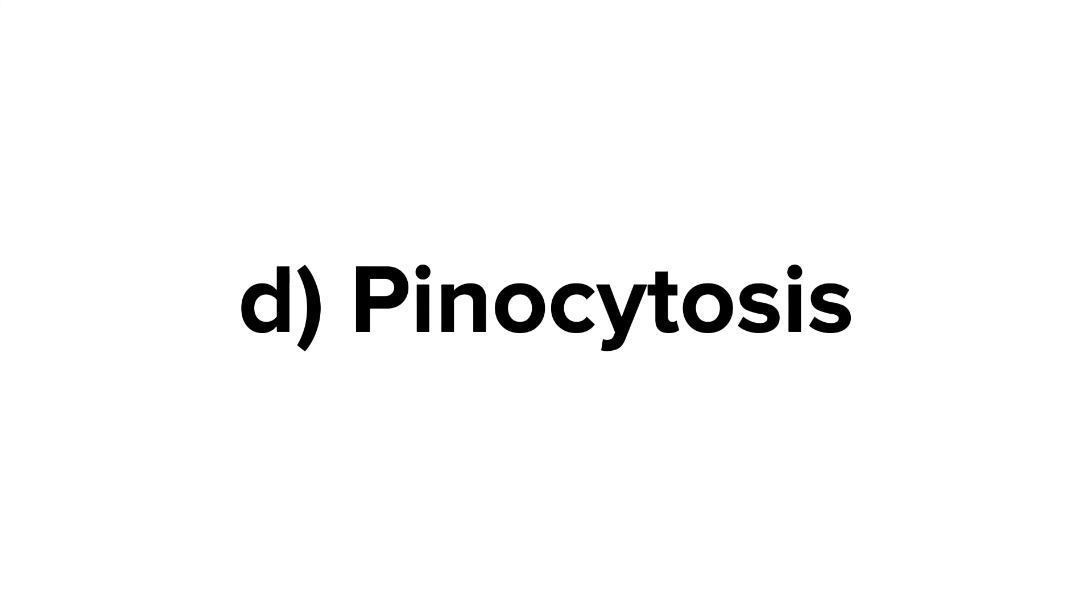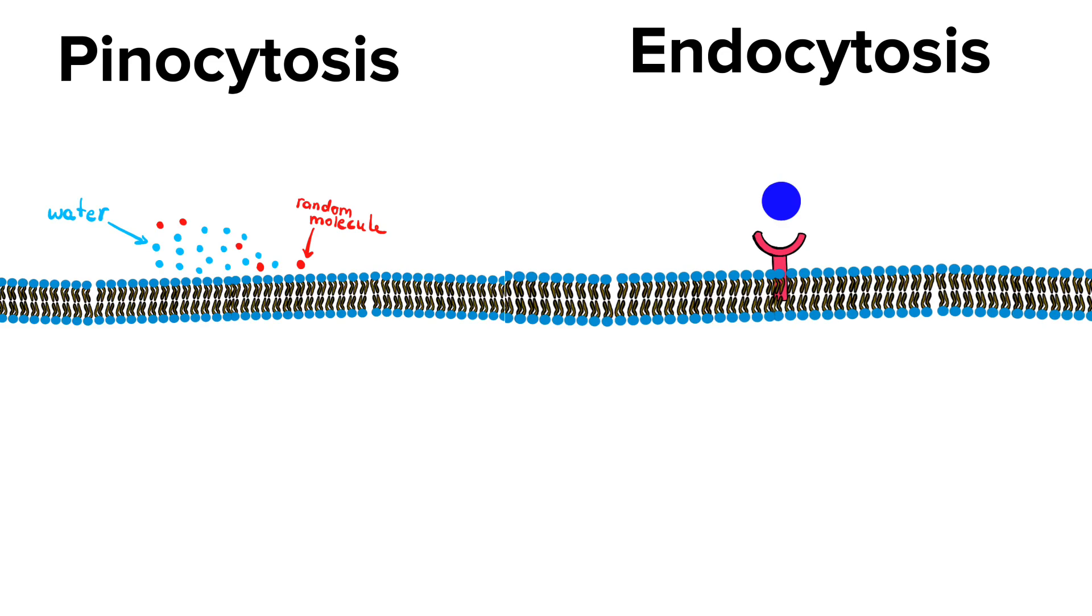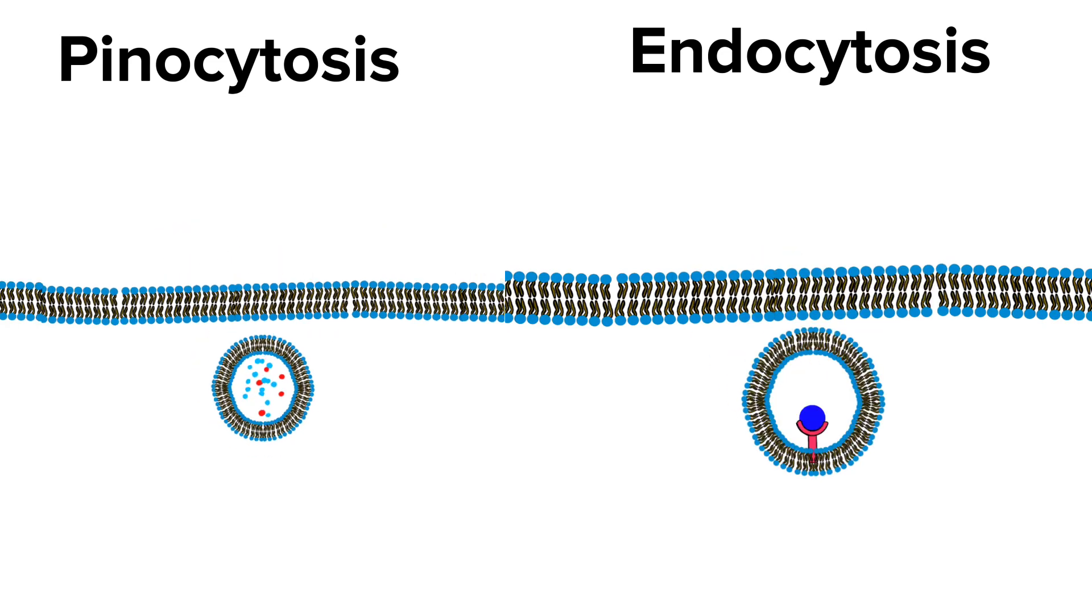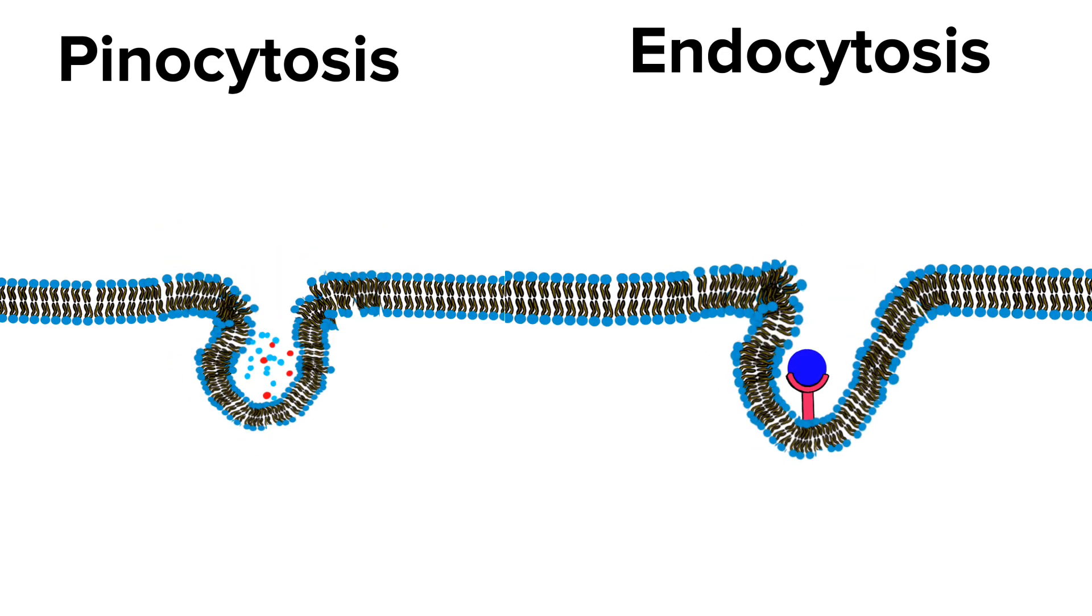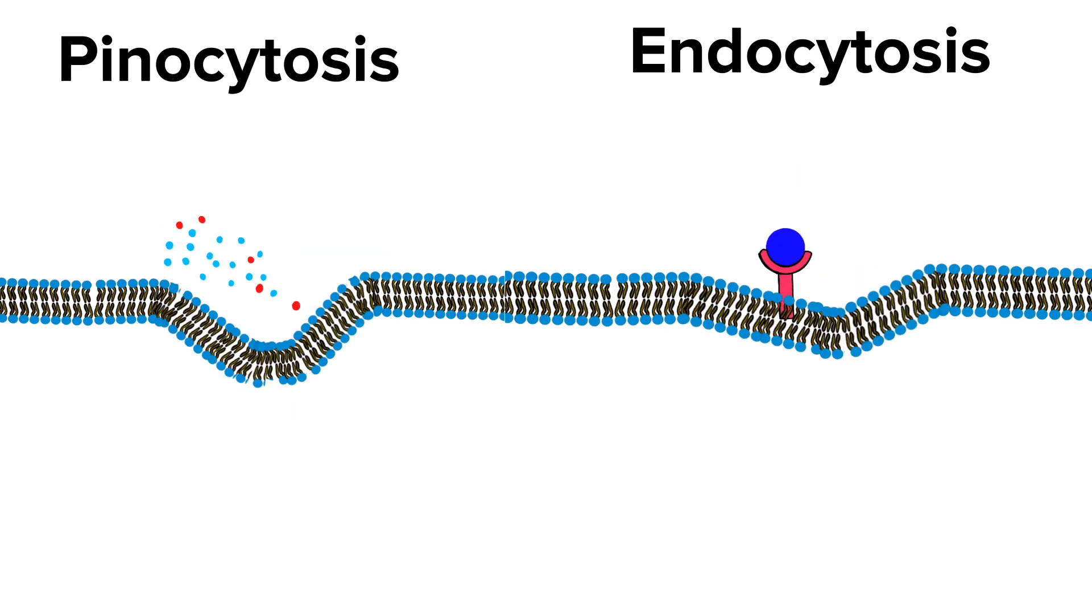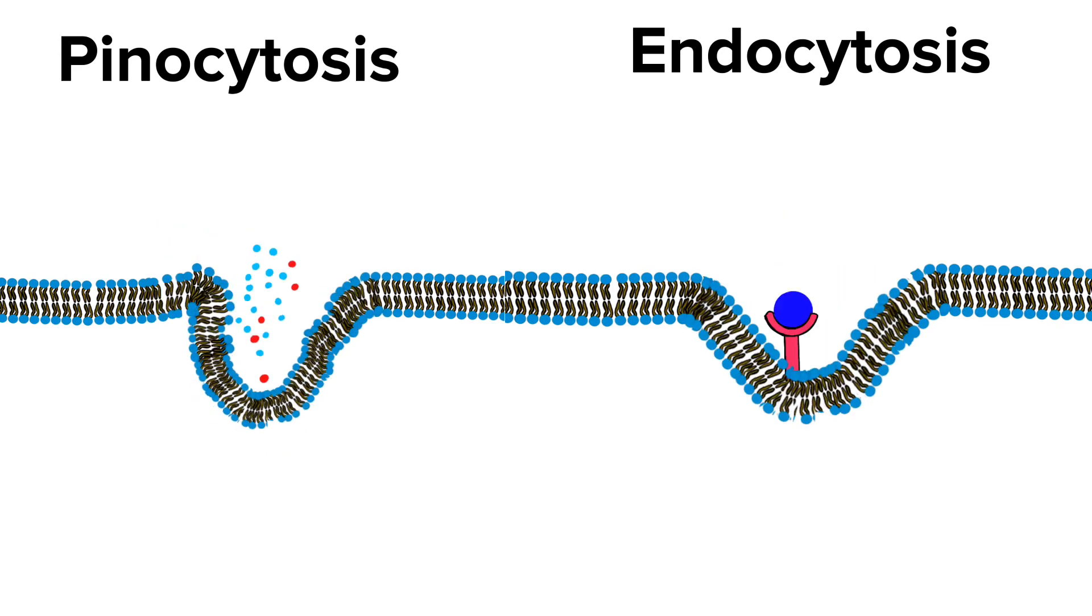The last method of active transport is pinocytosis. It literally means cell drinking. The difference between pinocytosis and endocytosis is that endocytosis requires binding to a receptor to trigger the process. Pinocytosis is the process of ingestion of extracellular fluids where molecules close to the membrane will be ingested too.